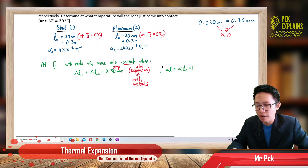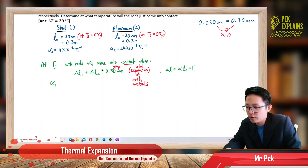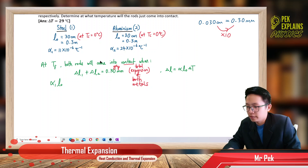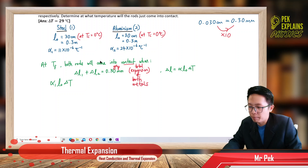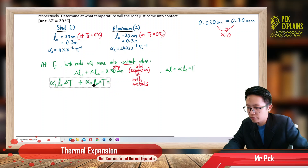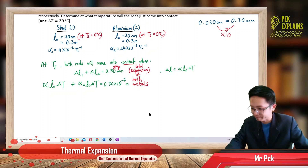Applying the formula alpha L0 delta T for both rods: delta L1 equals alpha 1 times L0 times delta T, and delta L2 equals alpha 2 times L0 times delta T. Since both have the same initial length, I use the same L0. I convert 0.3 mm to meters: that is 0.3 × 10⁻³ meters.